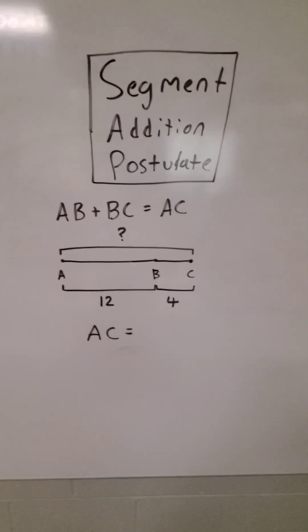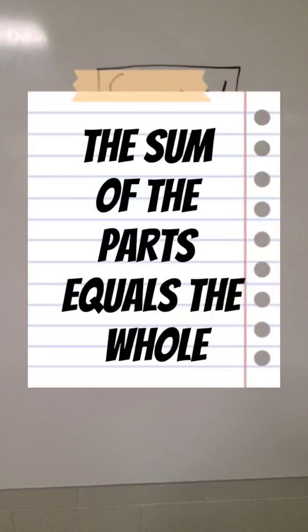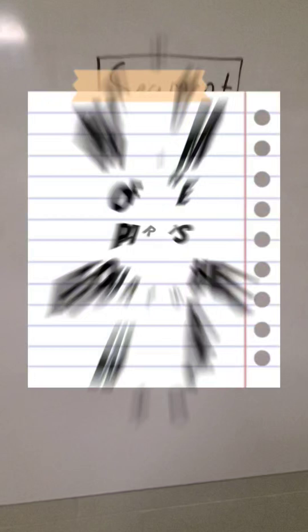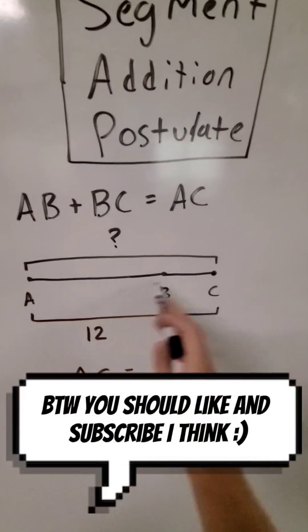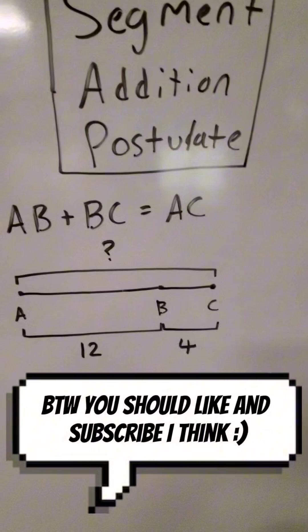Segment addition postulate is a fancy way of saying the sum of the parts is equal to the whole. So we have this formula up here which says AB plus BC, these two parts, is equal to the whole AC.